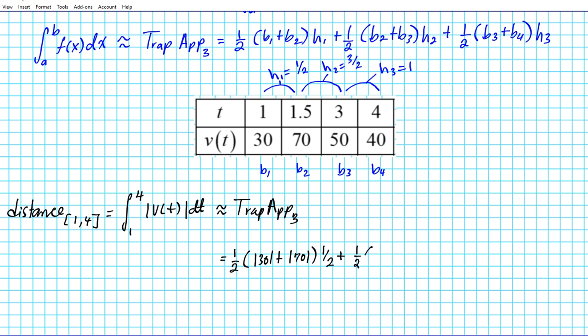Plus the third trapezoid, which is one half of base three plus base four times the height h3, which is one.